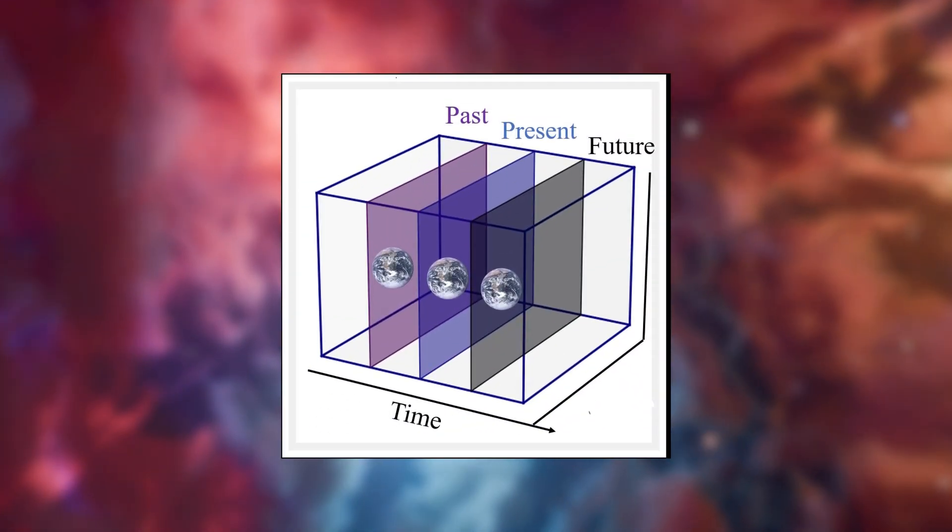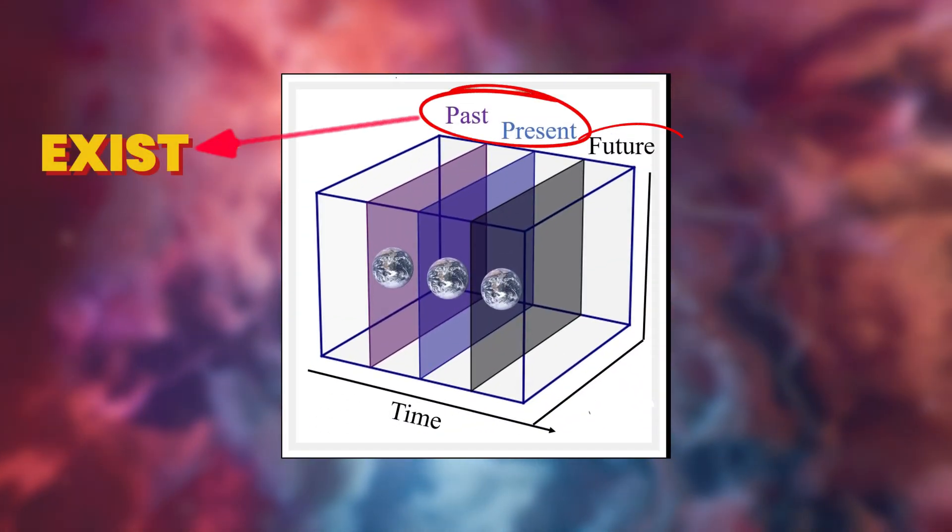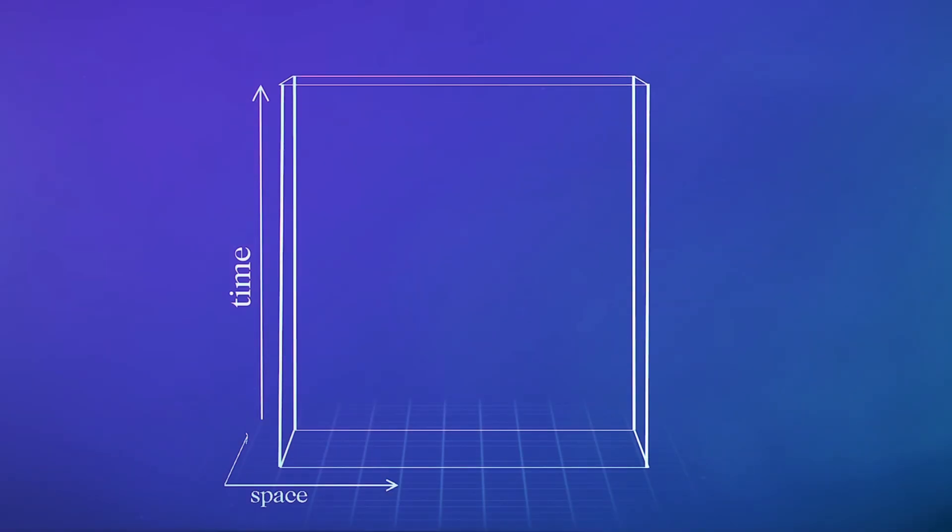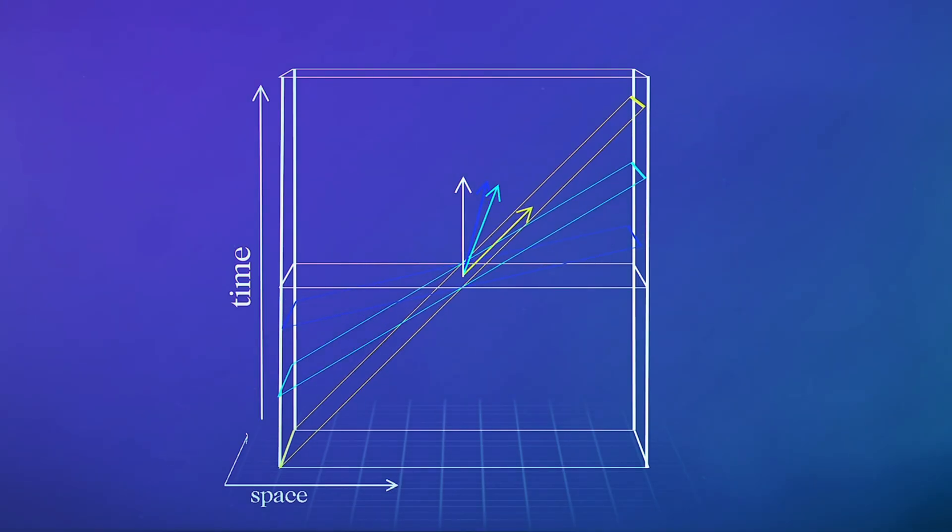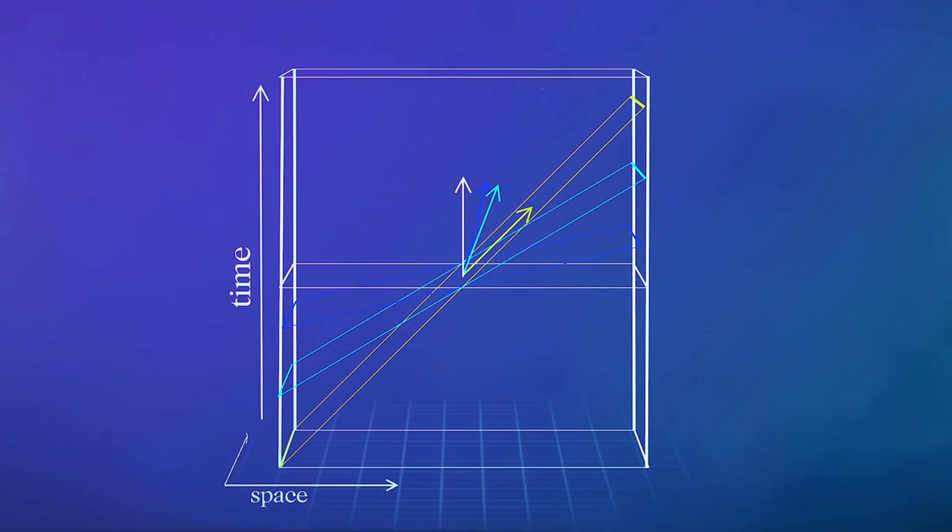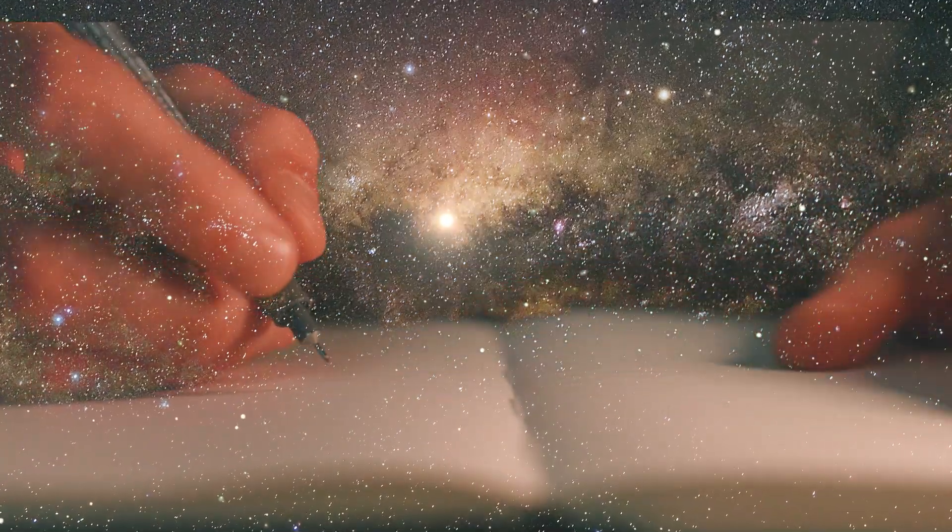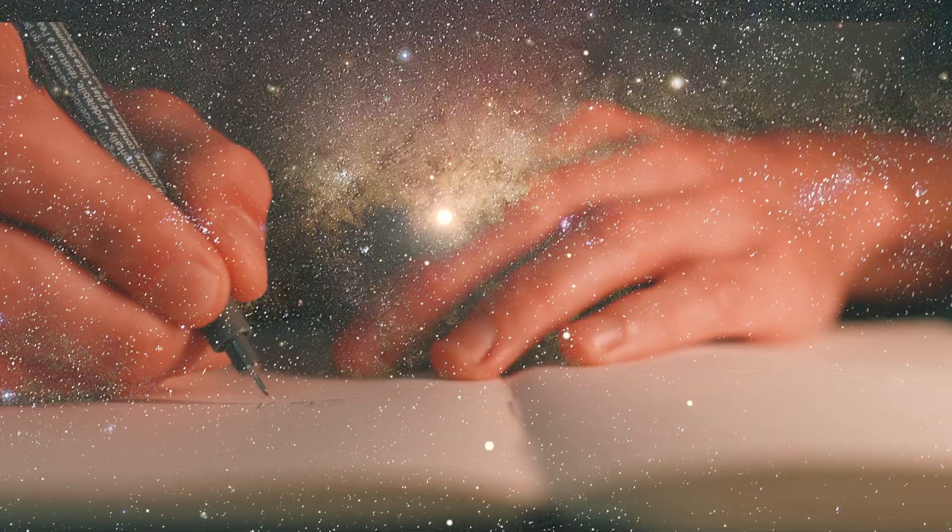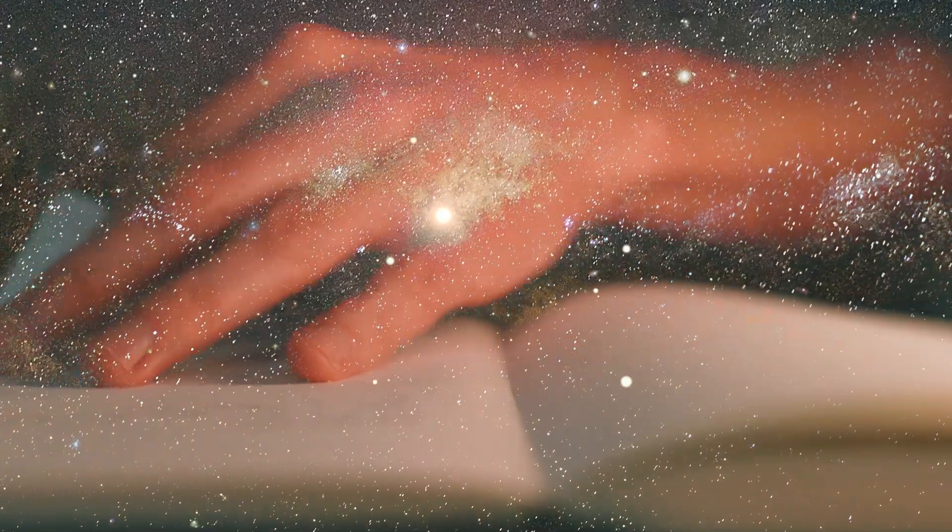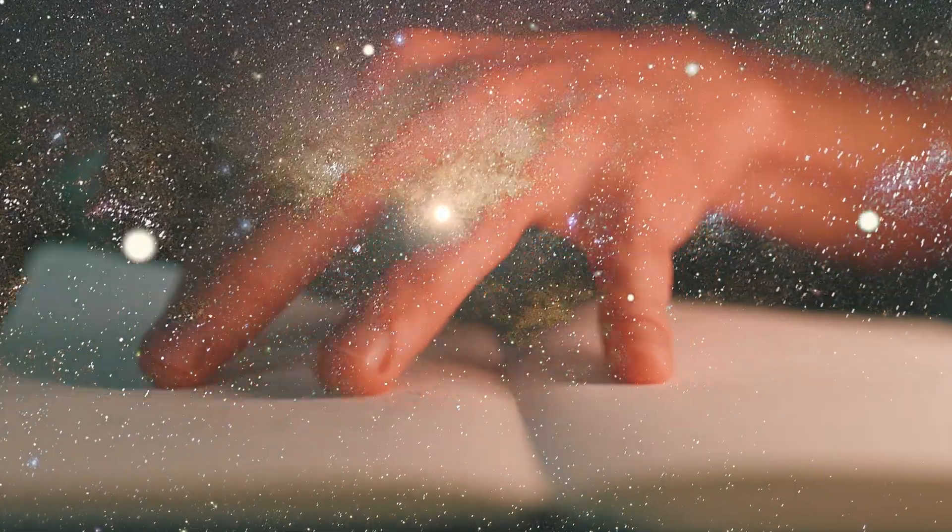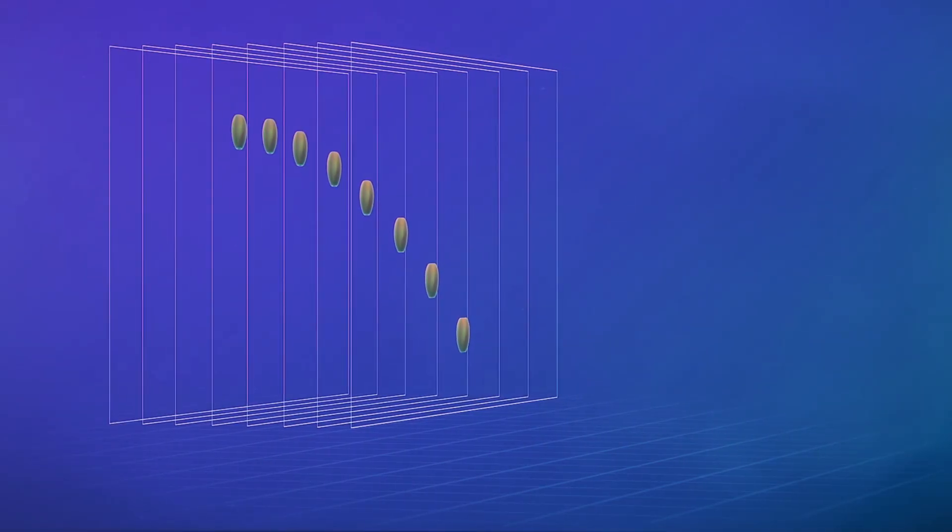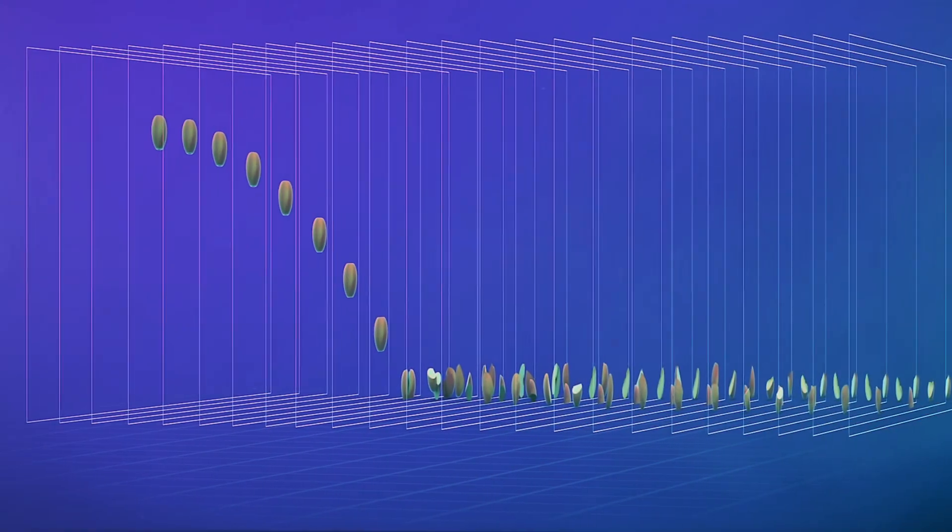One way to reconcile these ideas is with what philosophers call the growing block universe. This theory says that yes, the past and present exist, but the future does not, at least not yet. In other words, the block of space-time is growing as time passes. New events come into being at the edge of time, which is what we would call the present. You can imagine the history of the universe as a massive book being written page by page, with everything up to the current page already written, but the next pages are blank. With each moment, as events occur and quantum uncertainties resolve, another page gets written and added to the book. The block extends forward.